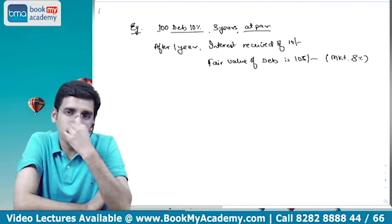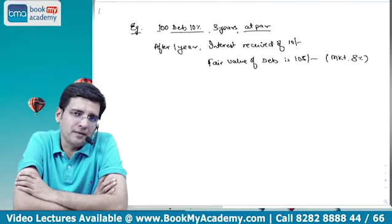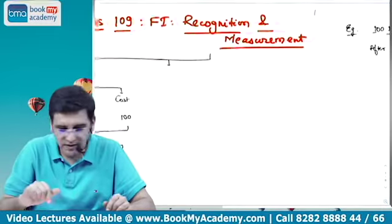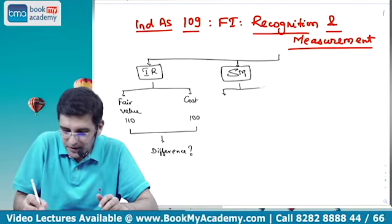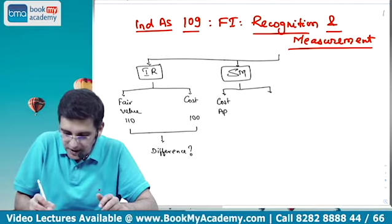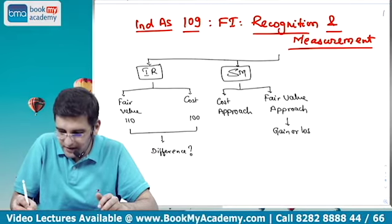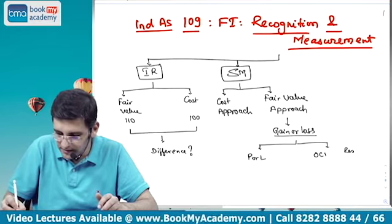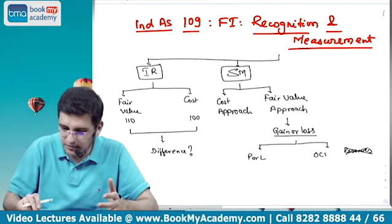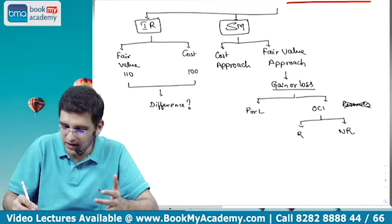When I say subsequent measurement, I mean how to record these financial assets on the reporting date. A simple approach could be to carry it at cost, or alternatively bring it to fair value. That brings us to our second discussion known as SM — subsequent measurement — whether it should be based on the cost approach or the fair value approach. If I go with the fair value approach, there will be a gain or loss. The question then is where this gain or loss should go — to P&L, to OCI, or to reserves. In this Ind AS, there's no concept of transferring to reserves. So we have two options: P&L or OCI, and within OCI we have reclassifiable OCI and non-reclassifiable OCI.